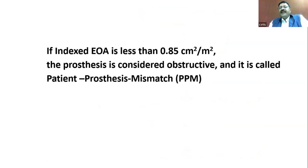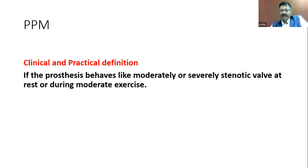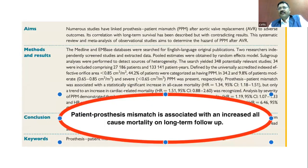The indexed effective orifice area is the effective orifice area divided by the patient's BSA in m². If it is less than 0.85 cm²/m², the prosthesis is considered obstructive — this is called patient-prosthesis mismatch (PPM). Clinically, if the prosthetic valve behaves like a moderately or severely stenotic valve, it is PPM. For those who believe in PPM, it is an important clinical consideration that adversely impacts long-term survival.